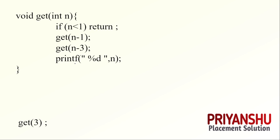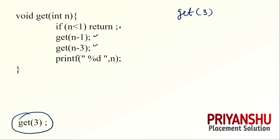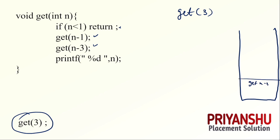Let us discuss this recursion-based question. In Josh Technology, some questions are asked from the recursion topic, so keep in mind how to solve this type. So get(3) is called. n equals 3: is 3 less than 1? Condition is false, so it moves to the next part. We call get(n-1) first, while get(n-3) and print(n) — which is 3 — are stored in the stack.